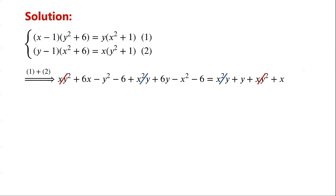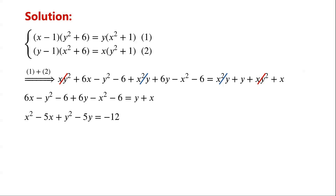So we can now write: 6X − Y² − 6 + 6Y − X² − 6 = Y + X. Simplify and rearrange the equation, we have: X² − 5X + Y² − 5Y = −12.